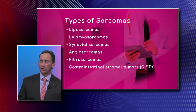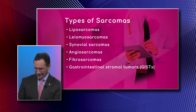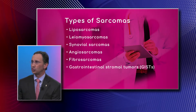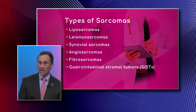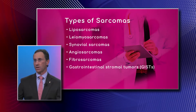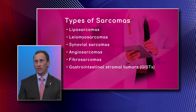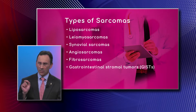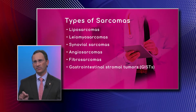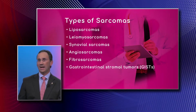Synovial sarcomas are sarcomas arising from the lining of your joints — so the joint capsule, whether it be the knee, the wrist, the shoulder, etc. Those actually can have very aggressive behavior and outcomes are still not the best.